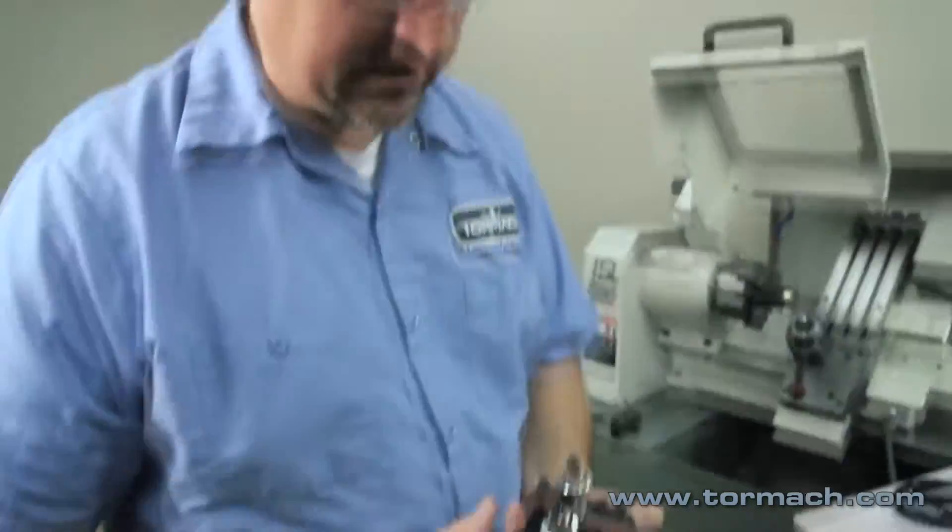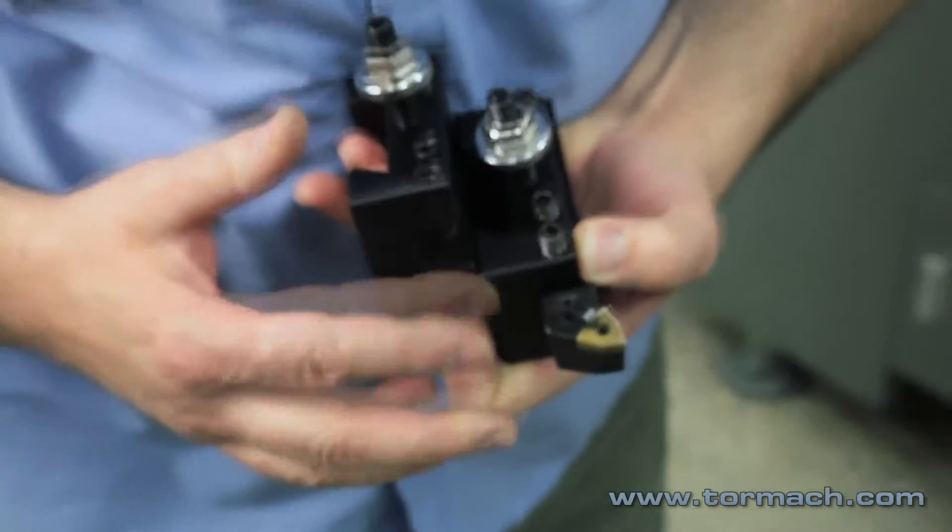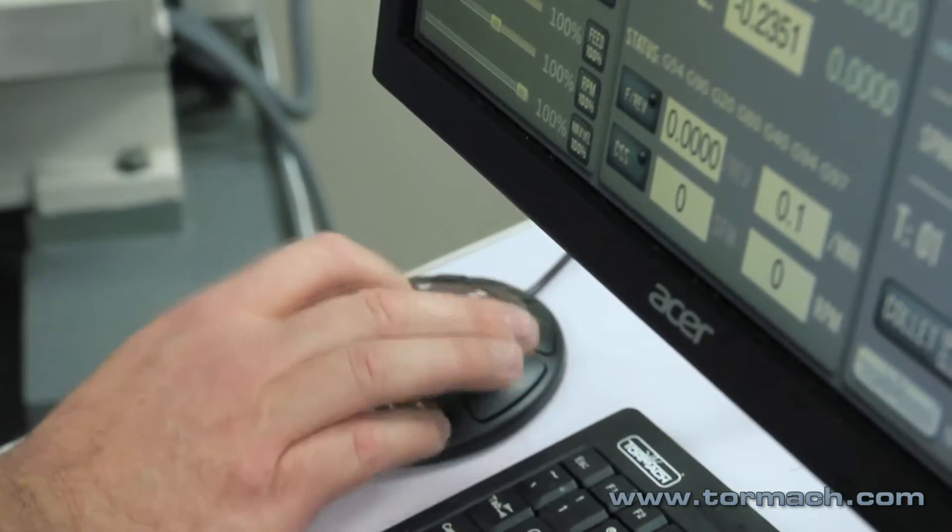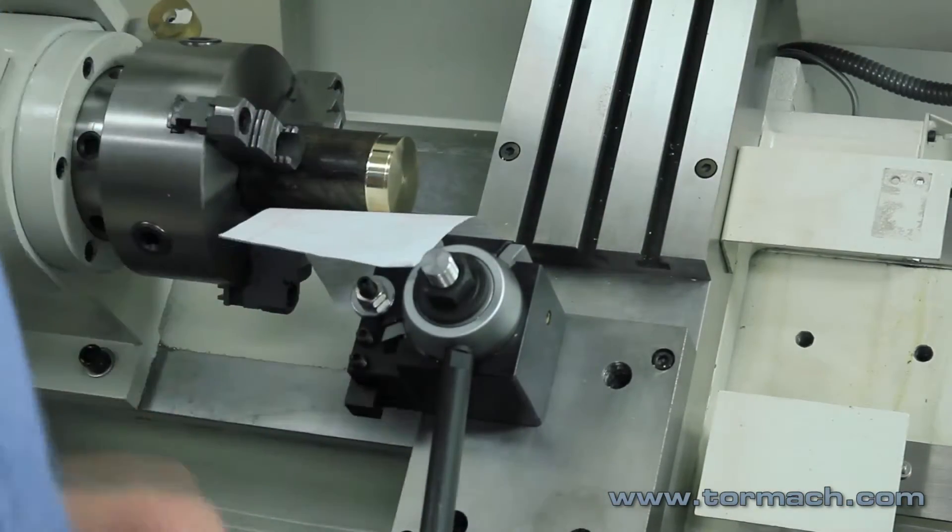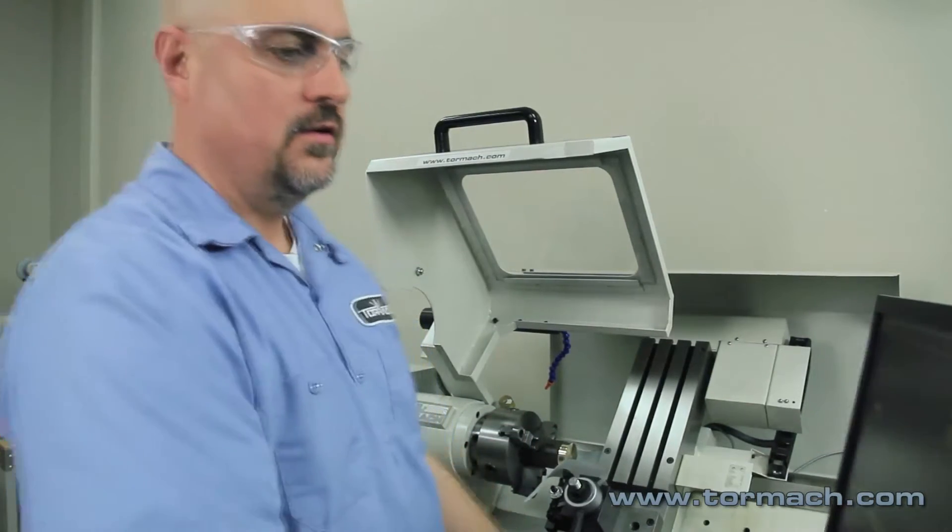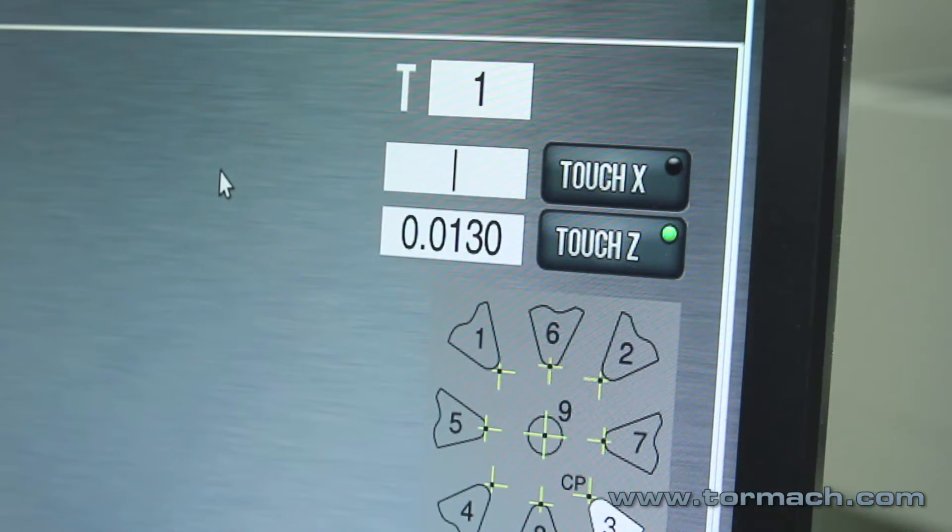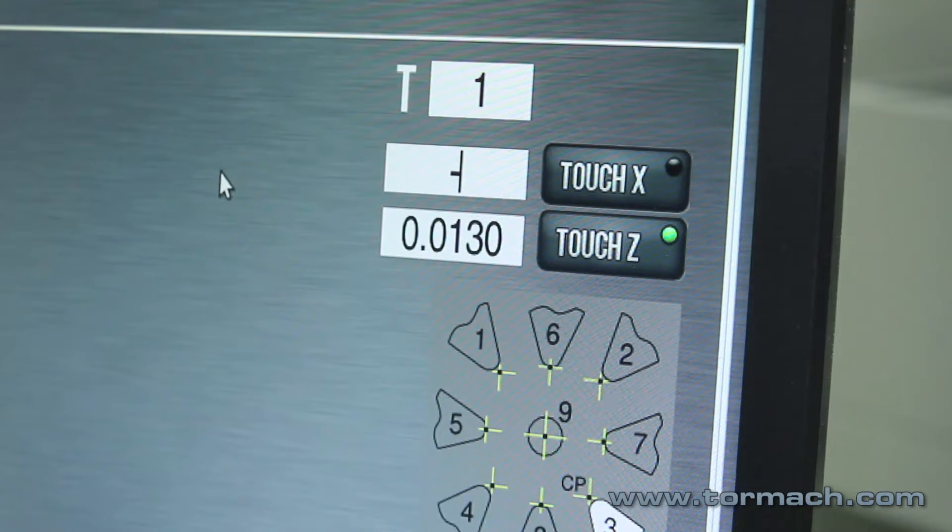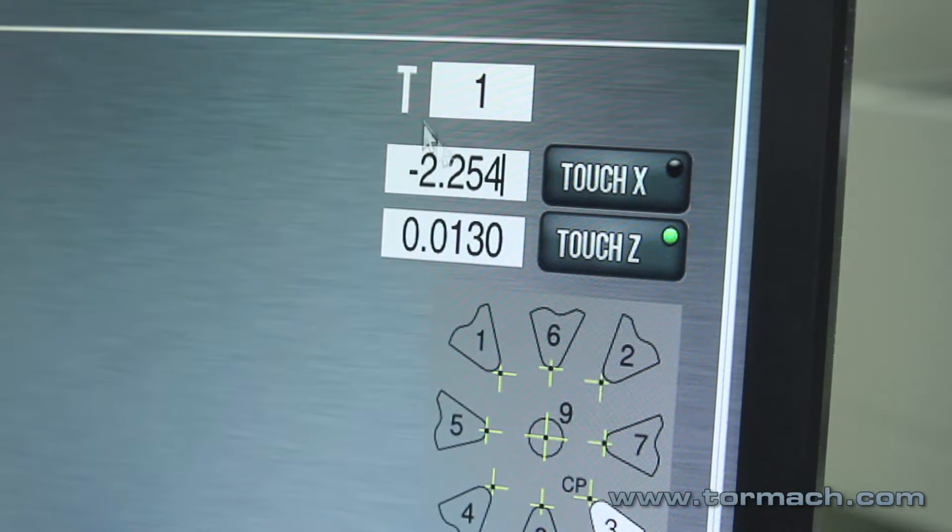Now when we go to touch the X off, that value is going to be the difference from where we touched off here and the cutting notice radius up here. We've got the cutter dragging on the piece of paper. We'll enter our value in the box here. Remember it's a negative value because you're on the bottom side of the diameter. So negative 2.254. Touch X.